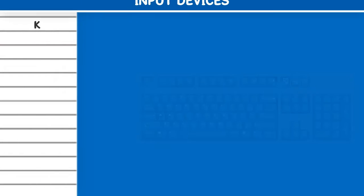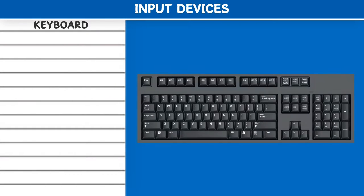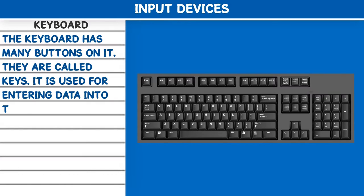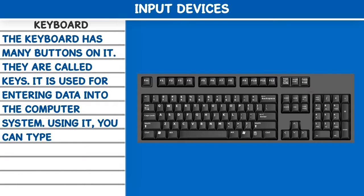Input Devices. Keyboard: The keyboard has many buttons on it. They are called keys. It is used for entering data into the computer system. Using it, you can type numbers, words and symbols.